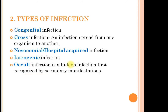Congenital infections are infections which are transmitted from the mother to the baby. They can be transmitted before birth, during birth, or after birth. Cross infection is an infection which spreads from one organism to another organism — so all infections that are transmitted are actually cross infections.